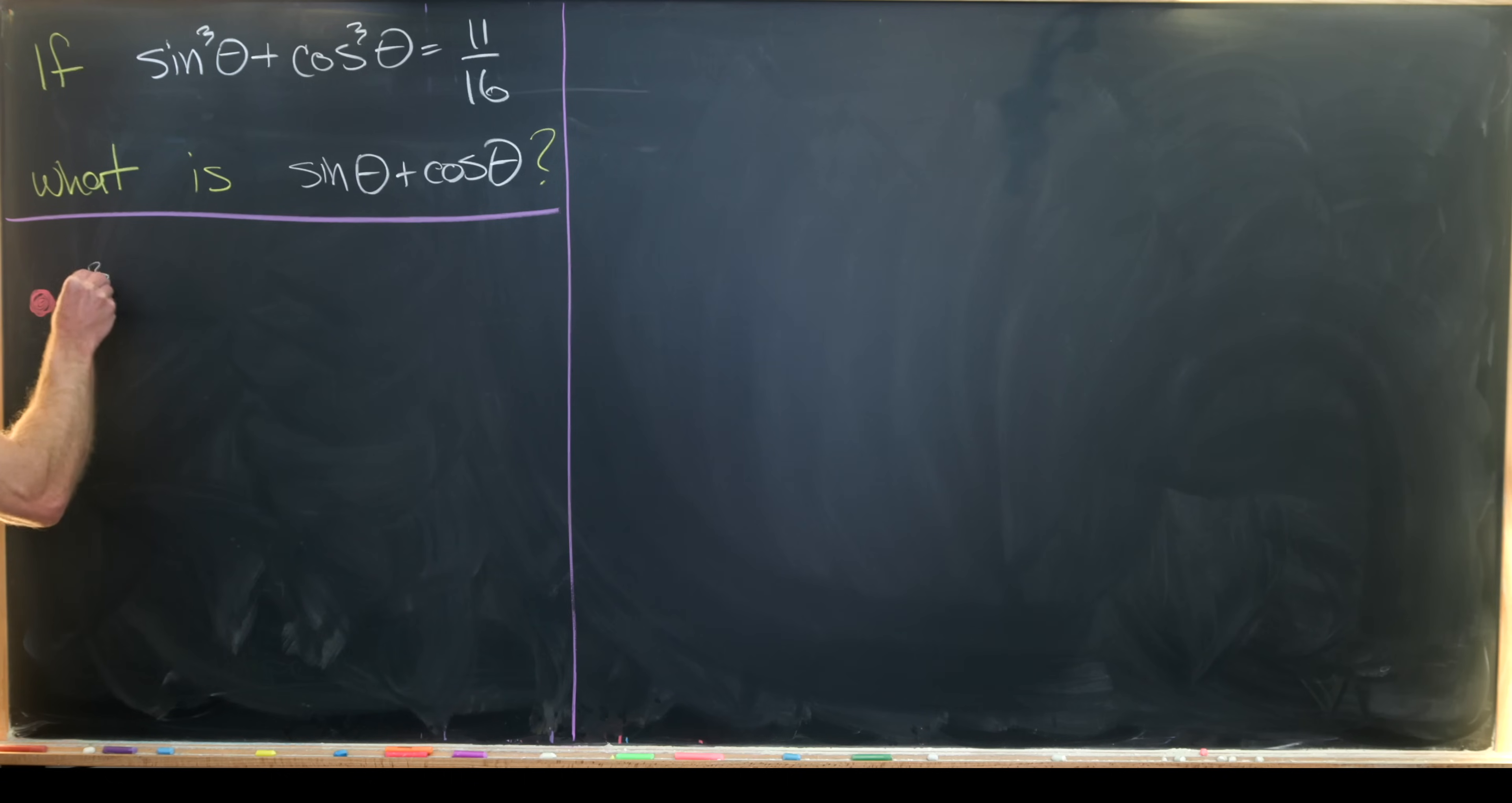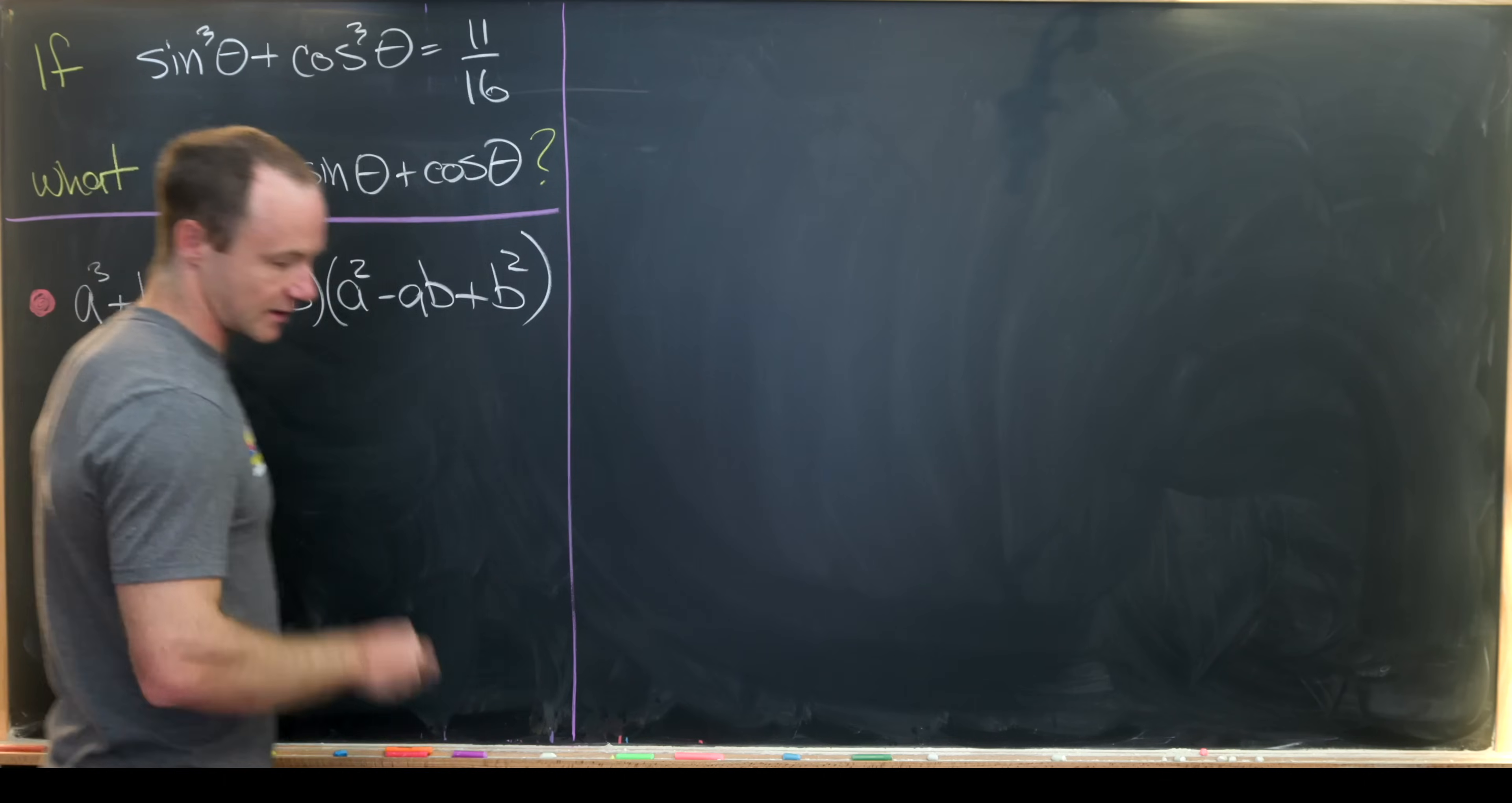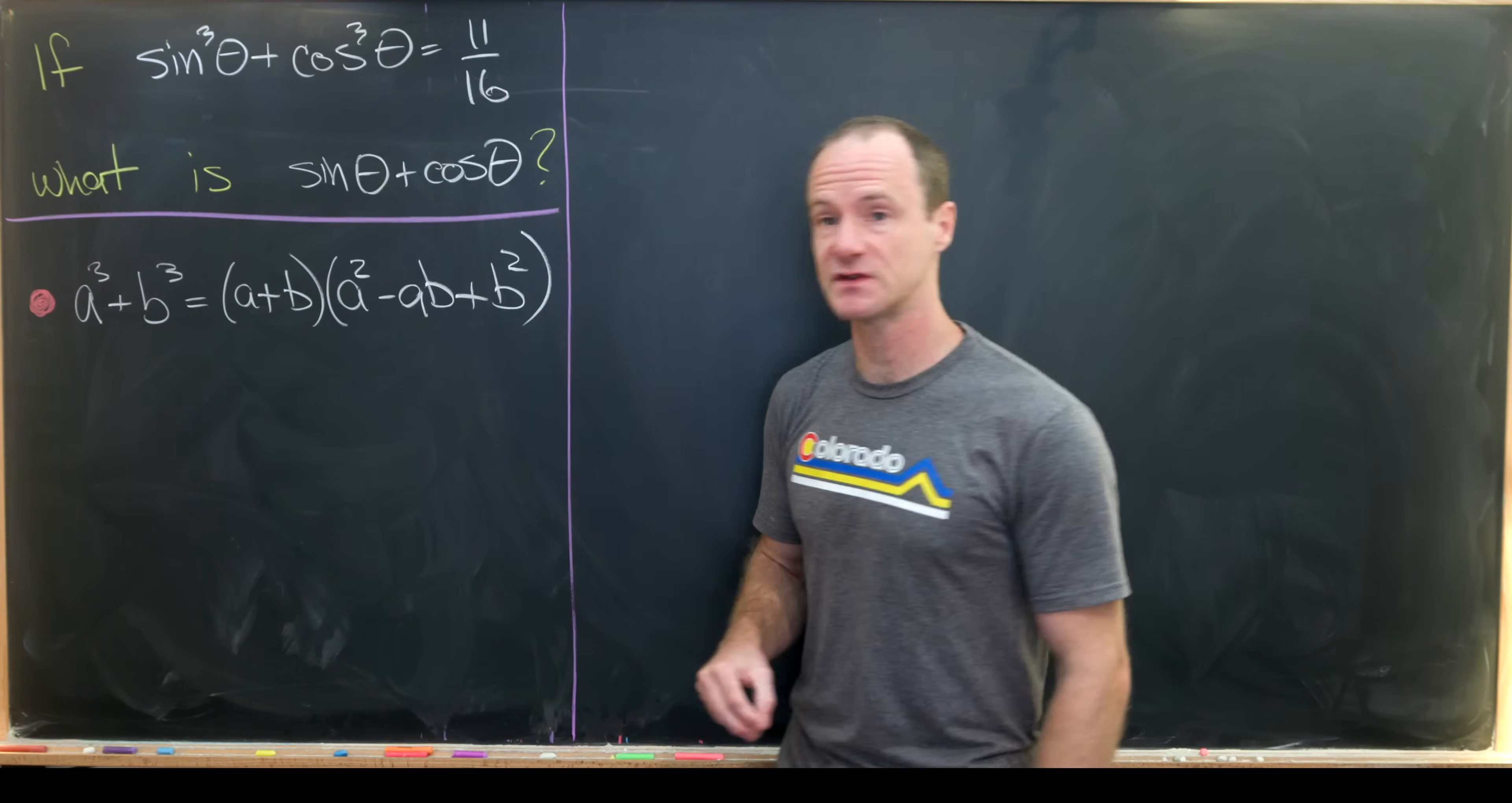Let's recall that a cubed plus b cubed can be factored as a plus b times a squared minus ab plus b squared. You can check that just by multiplying out the right hand side and see that you do in fact end up with the left hand side. That's one of the things that we'll use.